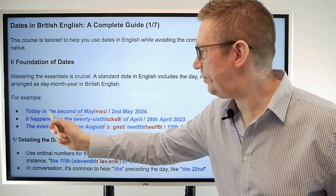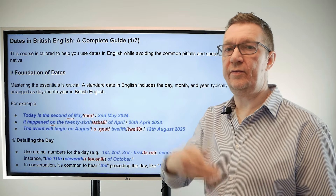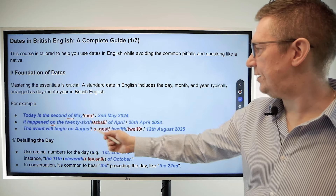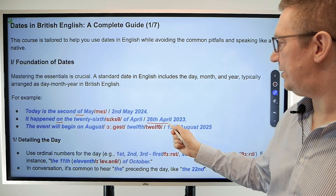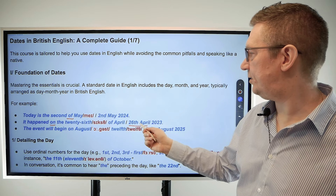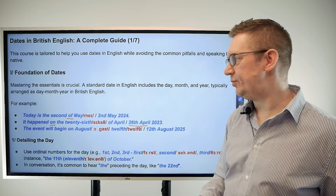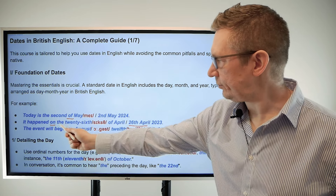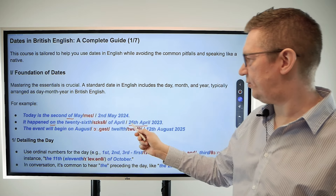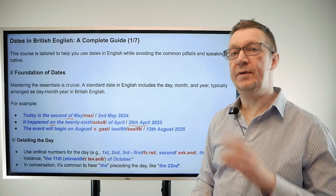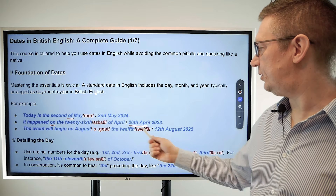The preposition is 'on' — on the 26th. Always 'on' a date: on Friday, on Monday, on a date — 26th of April 2023. We don't put 'of' when we write, but we definitely say it when we speak — this is very important. When it's written with words we would write 'of,' but when it's written as a date the 'of' is not there, even though it is spoken.